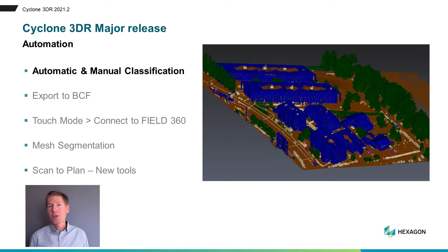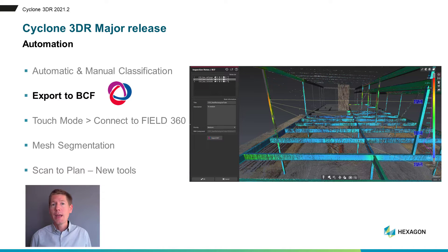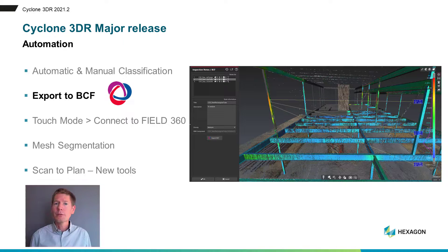Automatic and manual classification: the first tool based on artificial intelligence to classify your point clouds in one click. Export to BCF, to bring your BIM analysis results into the BIM ecosystem.